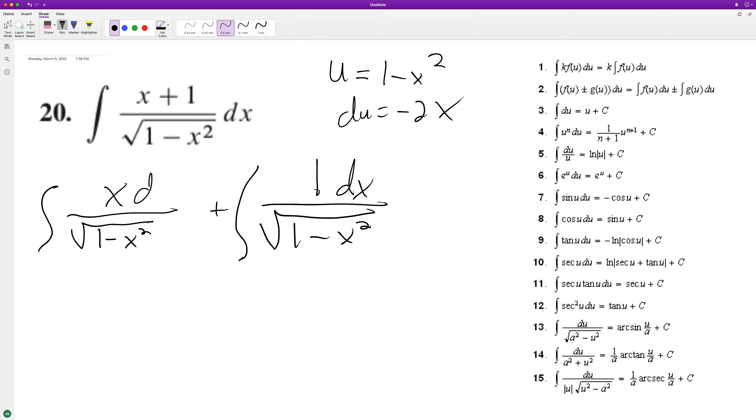Okay, so this becomes - to get for the first portion here, to get this equal to just x, we need to multiply du by negative 1 half to get rid of the negative 2 there. And then this is gonna be du over u raised to the 1 half, or just square root of u.